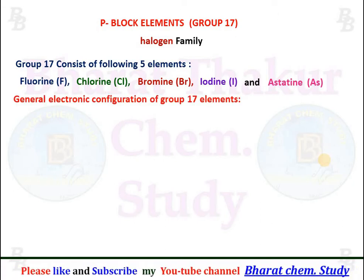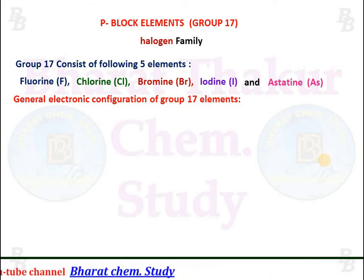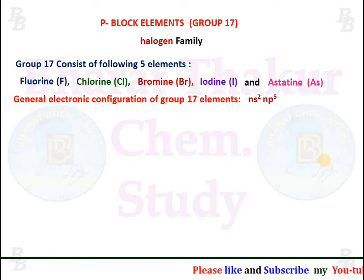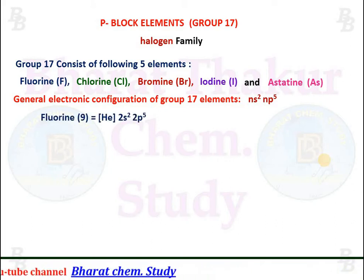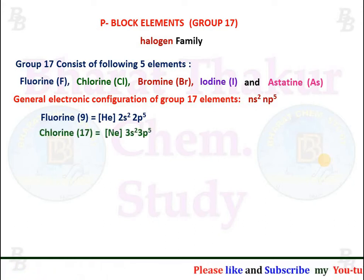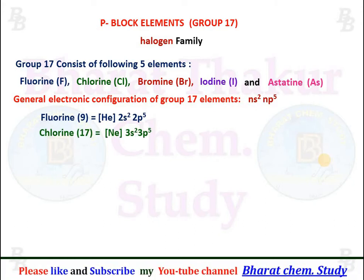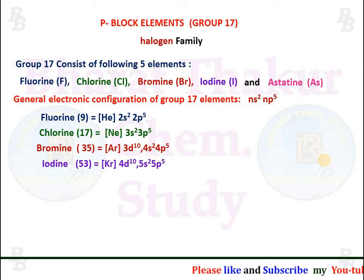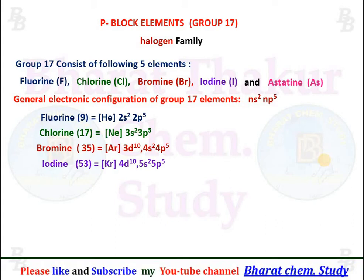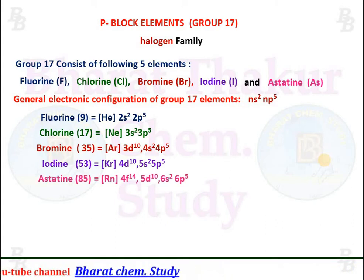The general electronic configuration of group 17 elements is ns² np⁵, meaning the last p orbital contains 5 electrons. Fluorine has 5 electrons in the 2p orbital, Chlorine in the 3p orbital, Bromine in the 4p orbital, Iodine in the 5p orbital, and Astatine in the 6p orbital.